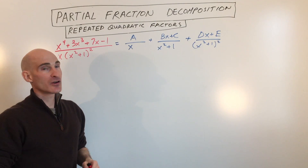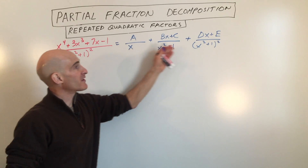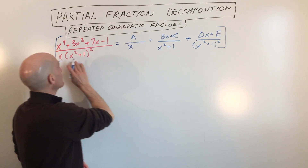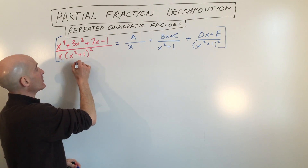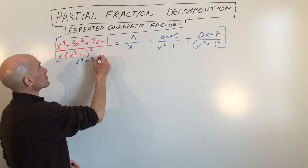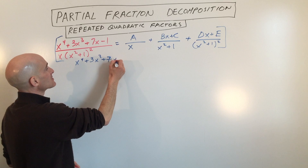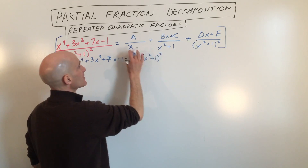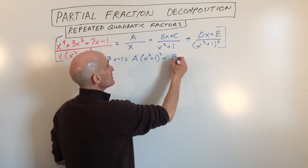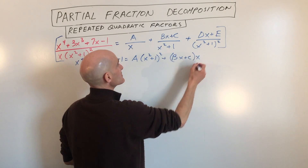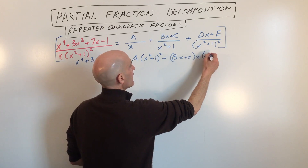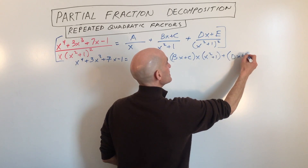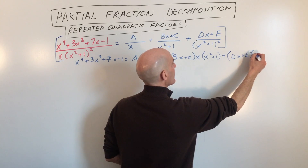This is a big problem; these take a little bit longer. What we're going to do is multiply through by the common denominator to clear the fractions — multiply both sides by the common denominator. When we do that, we're left with: x⁴ + 3x³ + 7x − 1 = A(x² + 1)² + (Bx + C)(x)(x² + 1) + (Dx + E)(x).